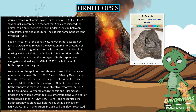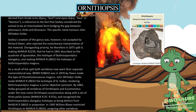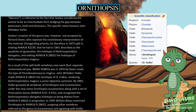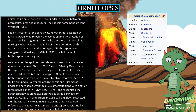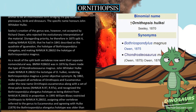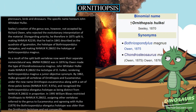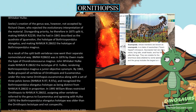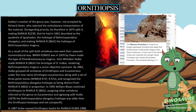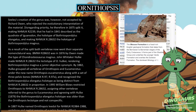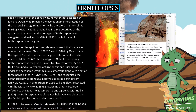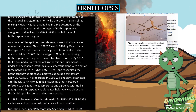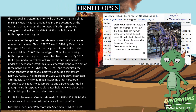As a result of the split, both vertebrae went their separate nomenclatural ways. NHMUK 28632 was in 1876 made the type of Chondrosteosaurus magnus. John Whitaker Hulke made NHMUK 28632 the lectotype of O. hulcae, rendering Bothriospondylus magnus a junior objective synonym. By 1882, Hulke grouped all vertebrae of Ornithopsis and Eucamerotus under the new name Ornithopsis eucamerotus, along with a set of three pelvic bones, and recognized the Bothriospondylus elongatus holotype as being distinct from NHMUK 28632 in proportion.